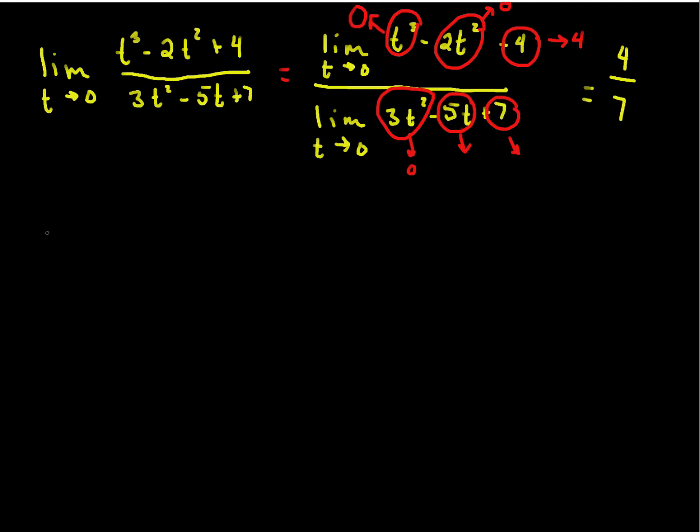Let's look at another example. The limit as x goes to 3 of x cubed minus 3x squared minus 4x plus 12, all divided by x squared minus 4x plus 3.